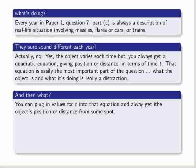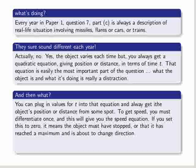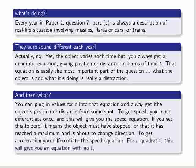And then what? You can plug in values for t into that equation and always get the object's position or distance from some spot. To get speed, you must differentiate once, and this will give you the speed equation. If you set this to 0, it means the object must have stopped, or it has reached a maximum and is about to change direction. To get acceleration, you differentiate the speed equation. For a quadratic, this will give you an equation with no t, because in fact you've differentiated a quadratic twice. You just get a number.